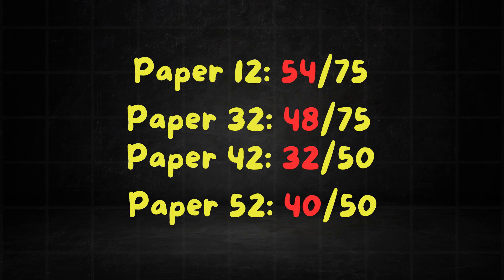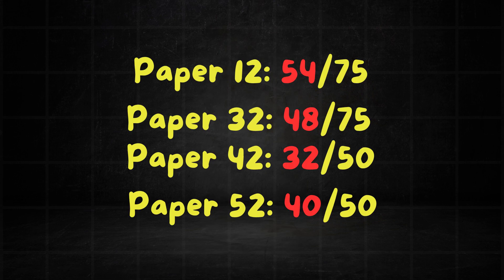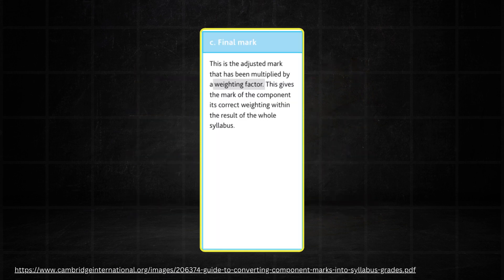These are Bob's raw marks for each component. From here, Cambridge might adjust the raw marks to ensure fairness and consistency, but in most cases they do not. So we're not going to adjust Bob's raw marks. The next step is to get the final mark for each component, and we do this by multiplying the raw mark by a weighting factor.